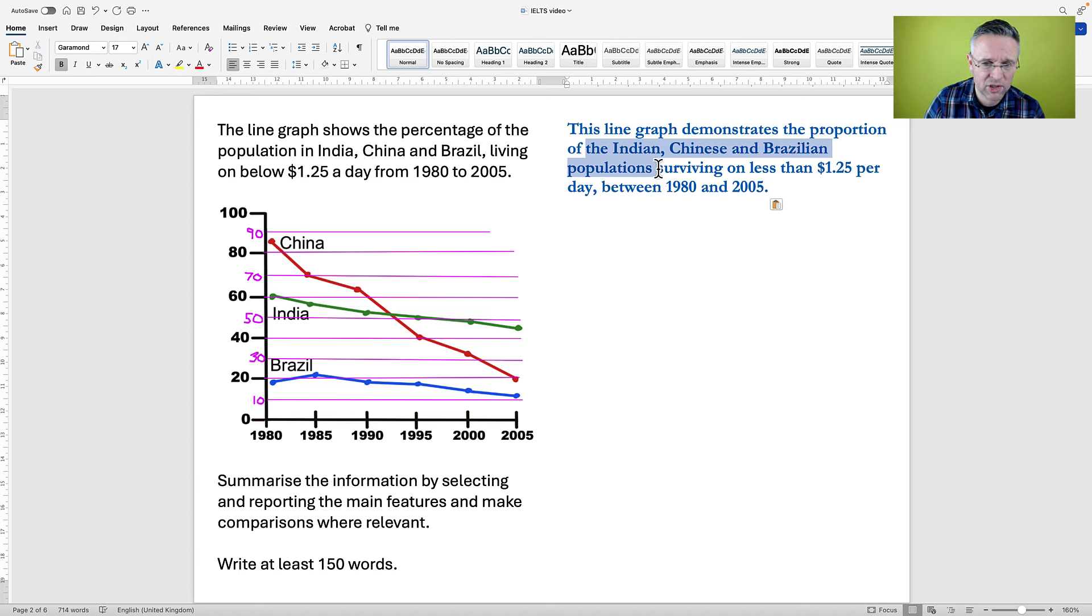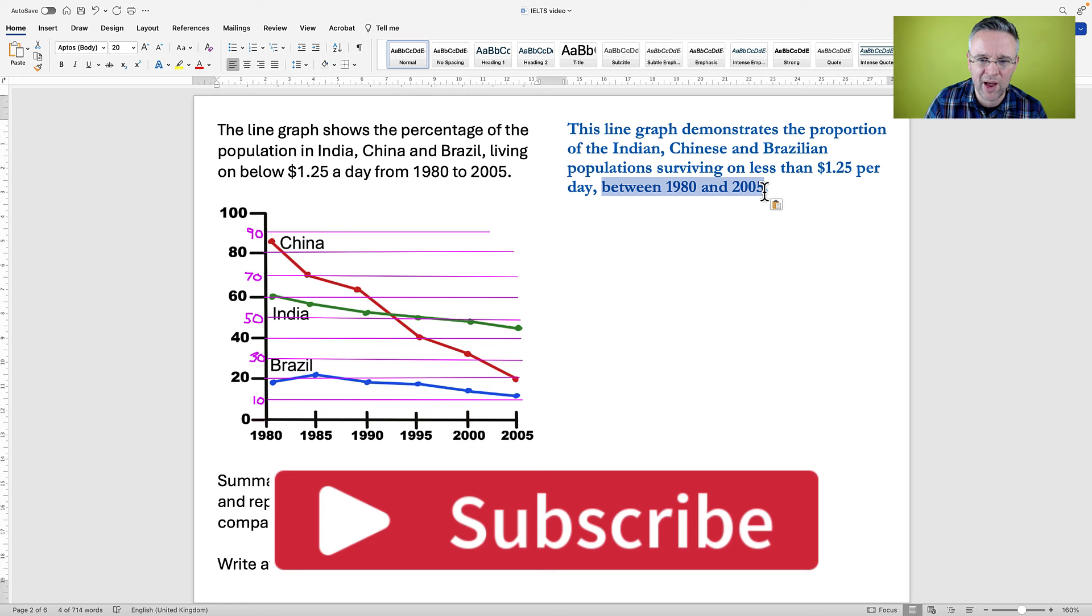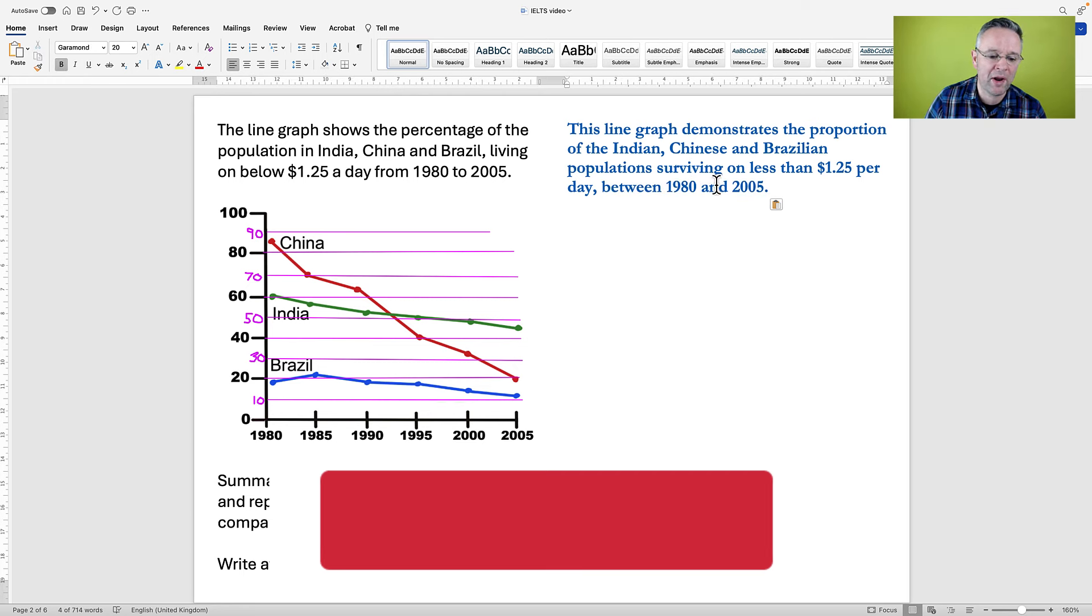Here we have living on below $1.25. I've said surviving on, because that's a very small amount. So you really are surviving. On less than. The question actually says below. So less than $1.25. And instead of a day, I have said per day. And then from 1980 to 2005, between 1980 and 2005. So super quick, use synonyms to write your introduction.